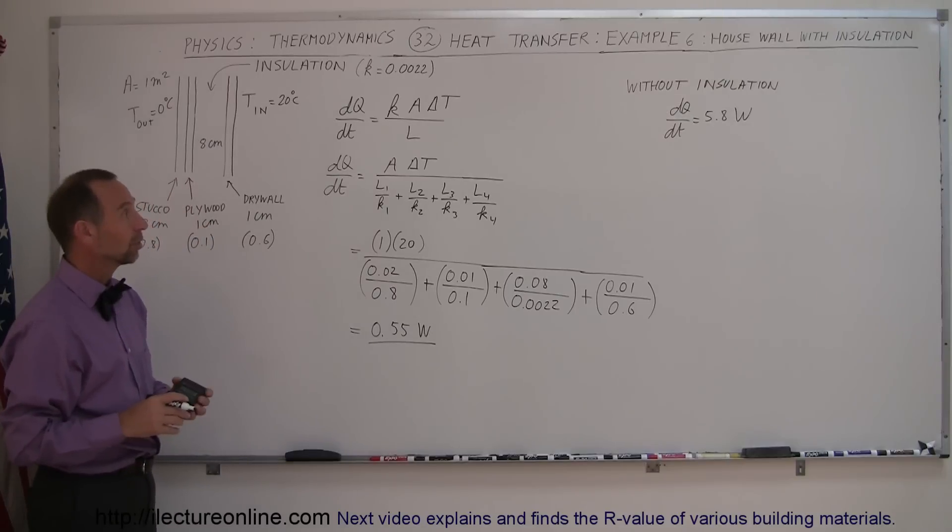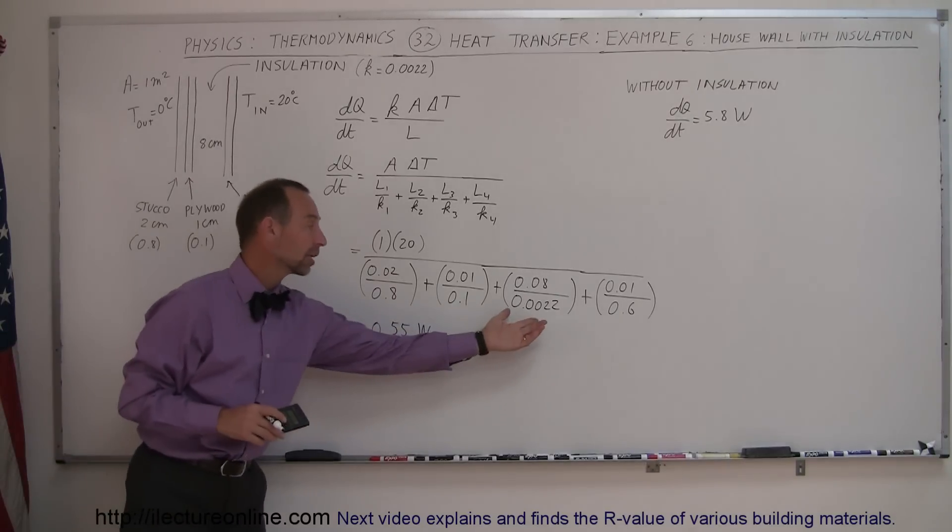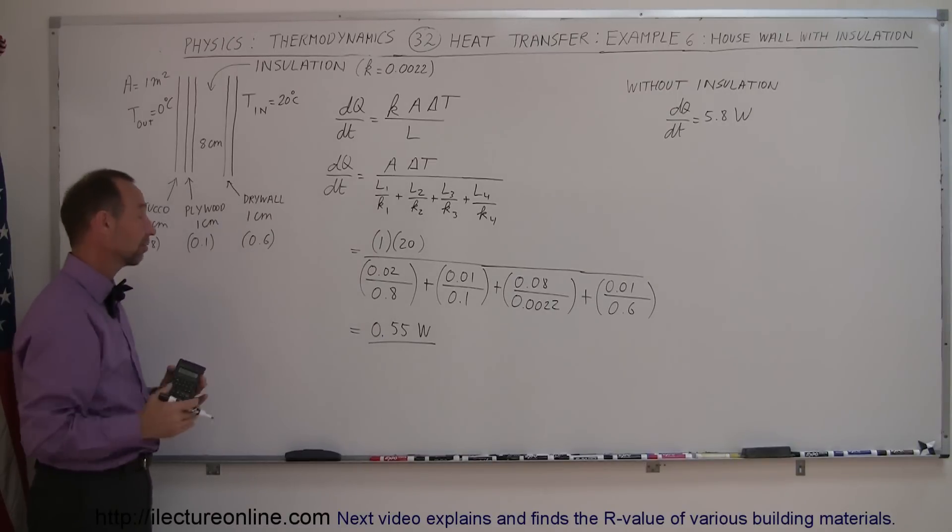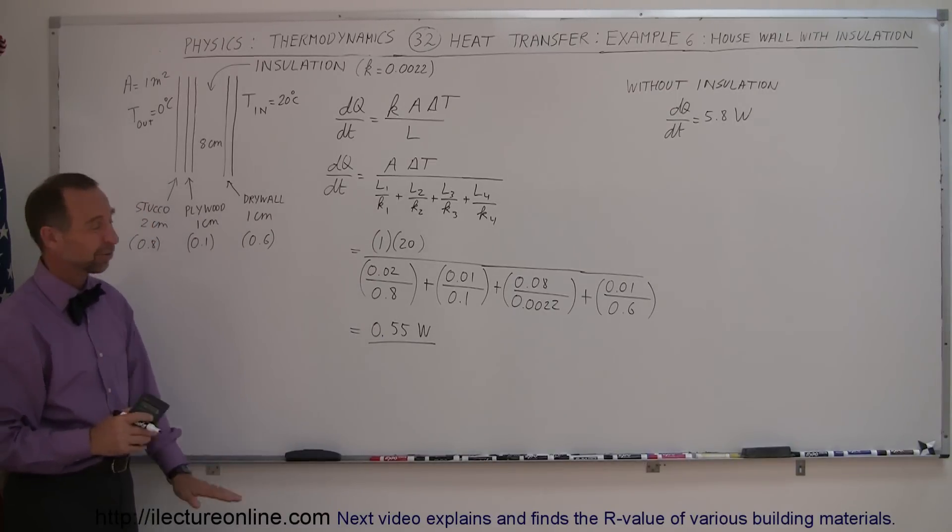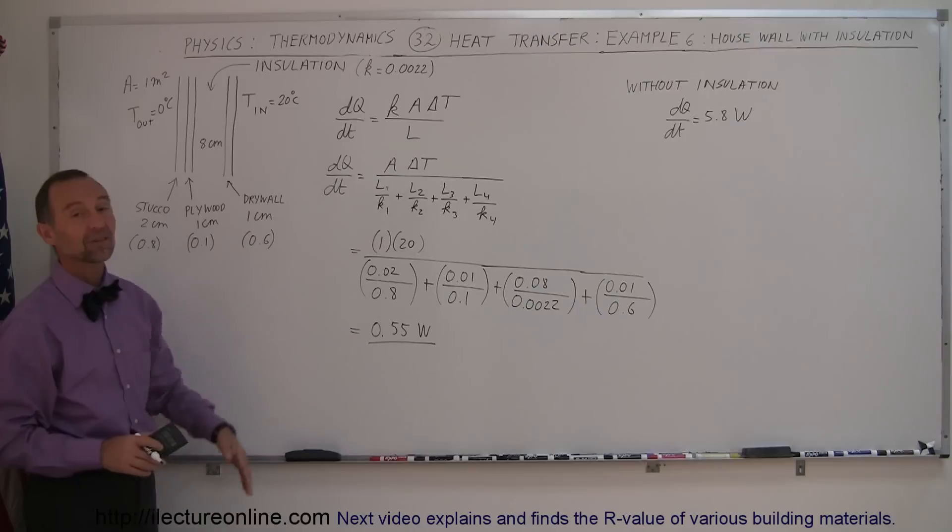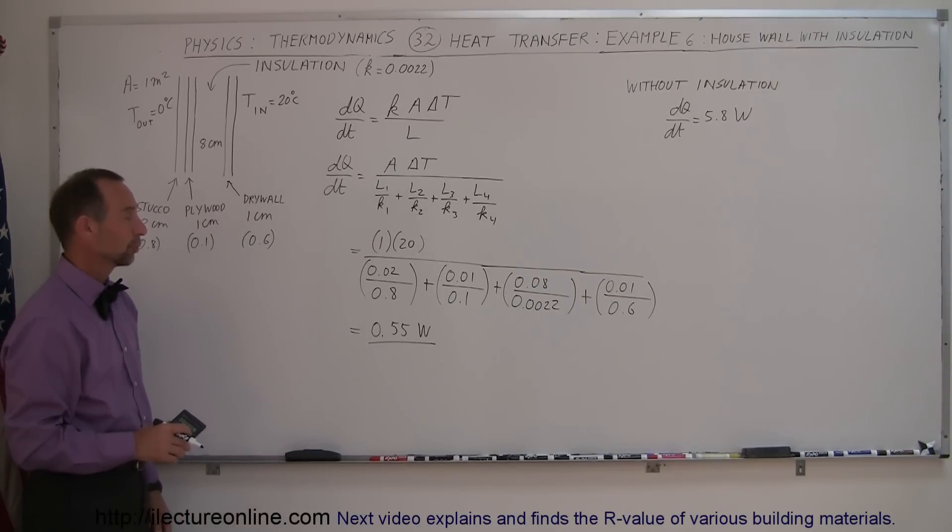Notice that it drastically reduced the heat loss through the wall by putting this insulating material in there. So that's why it's a really good idea when you build a house in an area where it's either very hot or very cold outside, that you put the insulation in the walls, put the insulation in the ceilings, put the insulation in the floor, anywhere you can put insulation in, you can see how much it makes a difference in the heat loss through the walls, the floors, the ceilings, and so forth.